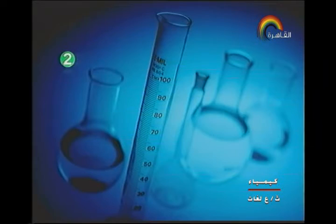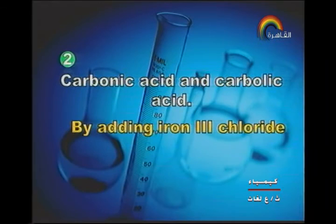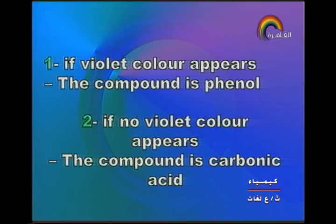Next point: carbonic acid and carbolic acid. Remember, carbolic acid is phenol. By adding iron(III) chloride to both — if the violet color appears, the compound is phenol (carbolic acid); if no violet color appears, the compound is carbonic acid.